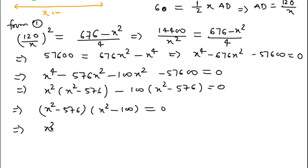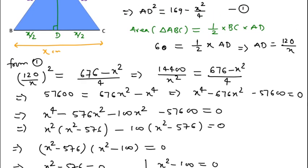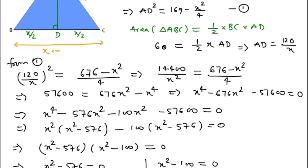We can write x square minus 576 equals 0 and x square minus 100 equals 0. So x equals under root 576, which gives x equals 24. Actually we get plus minus 24, but x can't be negative because this is length and length can't be negative.